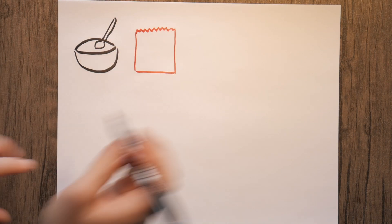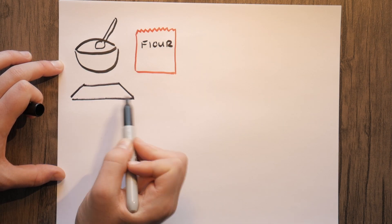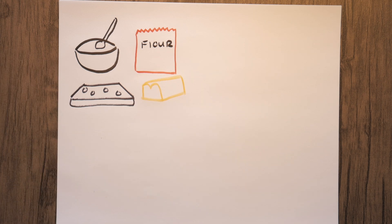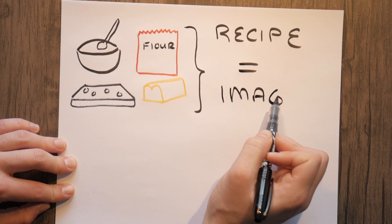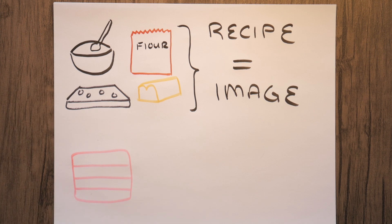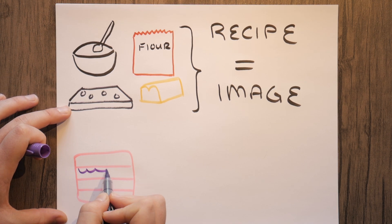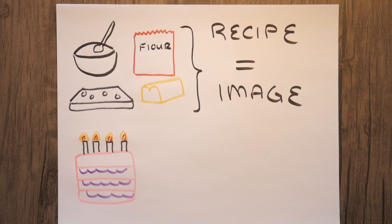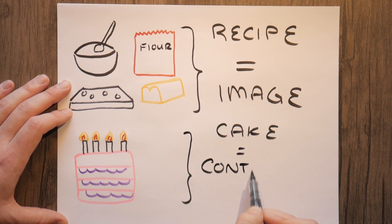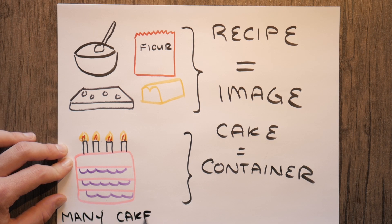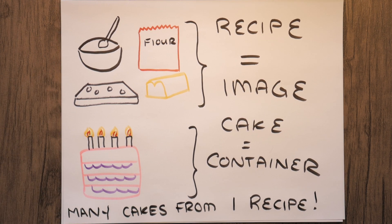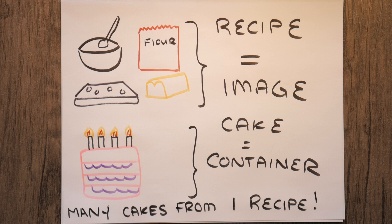If we analyze containers and images metaphorically, we can look at a whole bunch of recipes that contain a bunch of ingredients — this would be equivalent to an image. When we're talking about containers, we can think of a cake such that you can have many cakes from a single recipe. Given a recipe, you can spawn almost identical copies of that cake and distribute it to many different people. That's kind of how I think of containers and images as different entities.